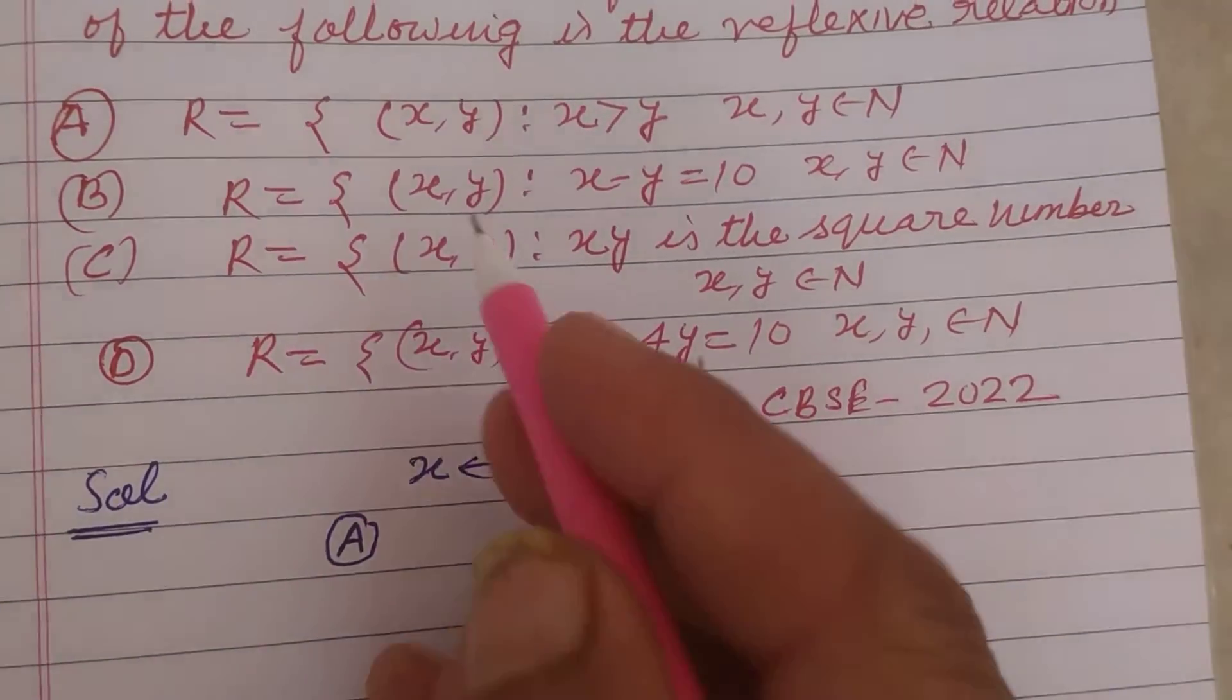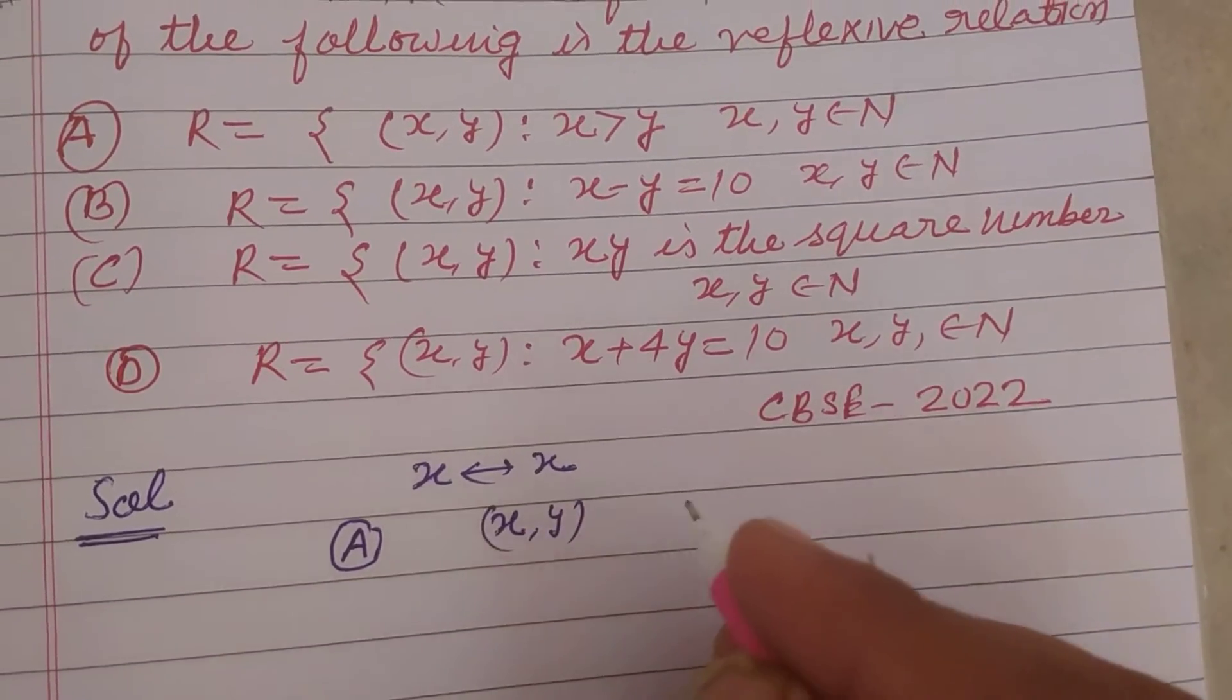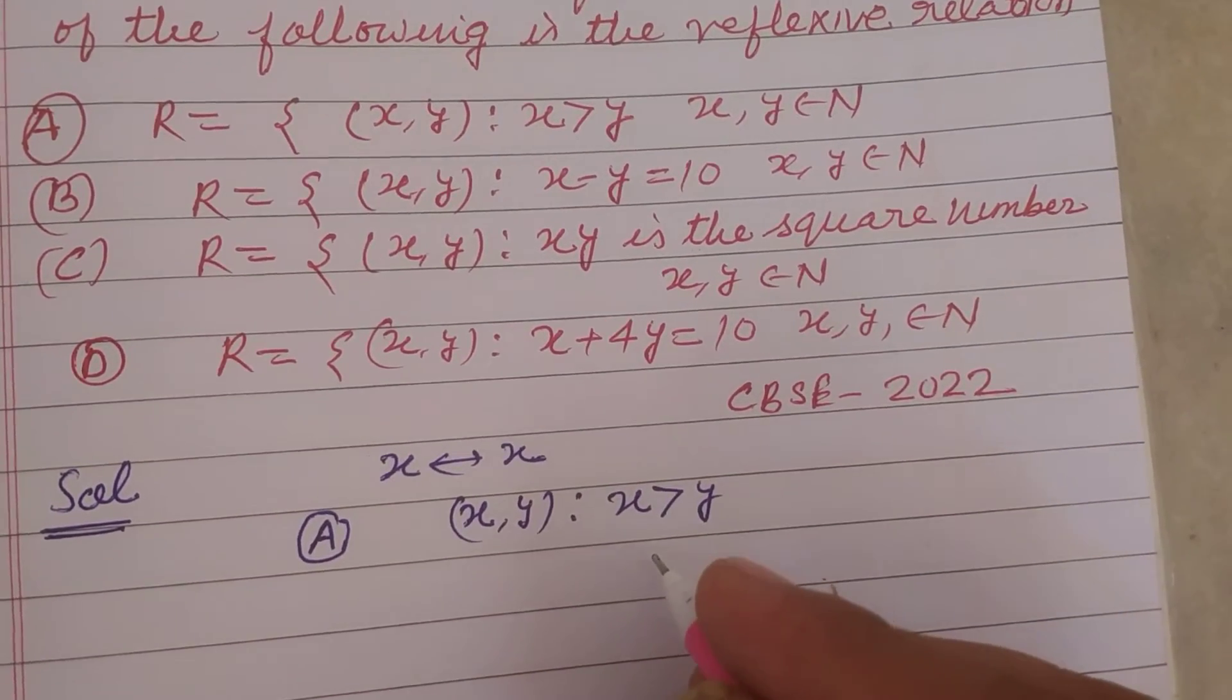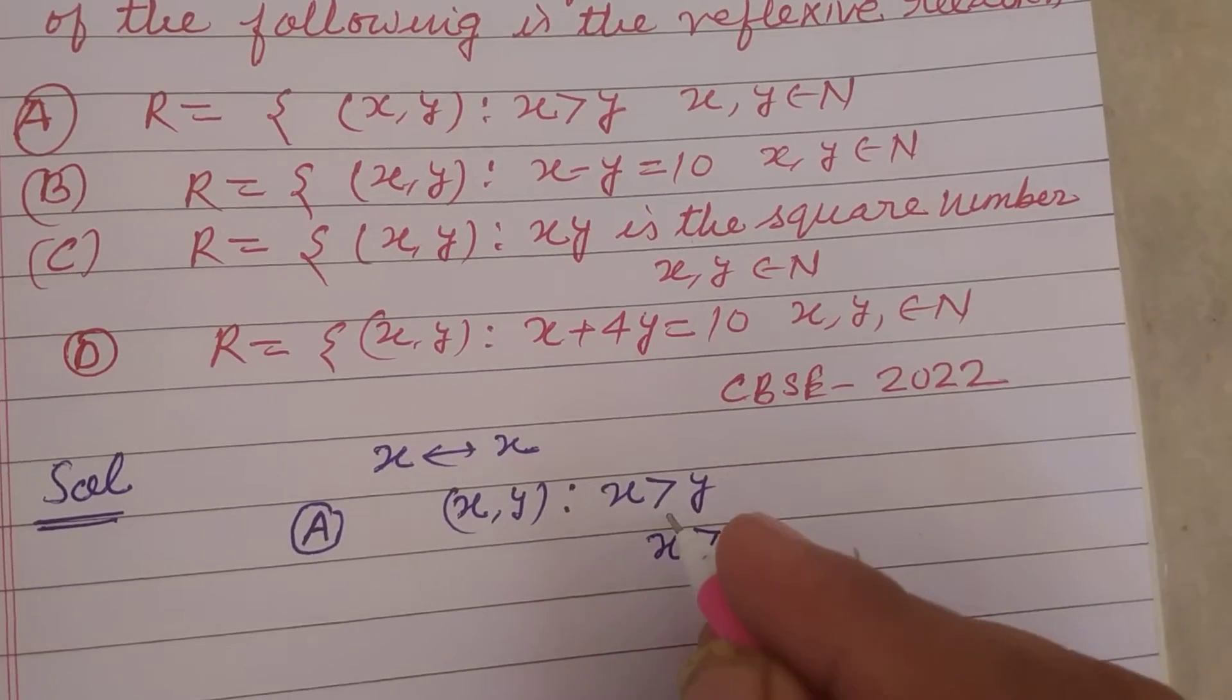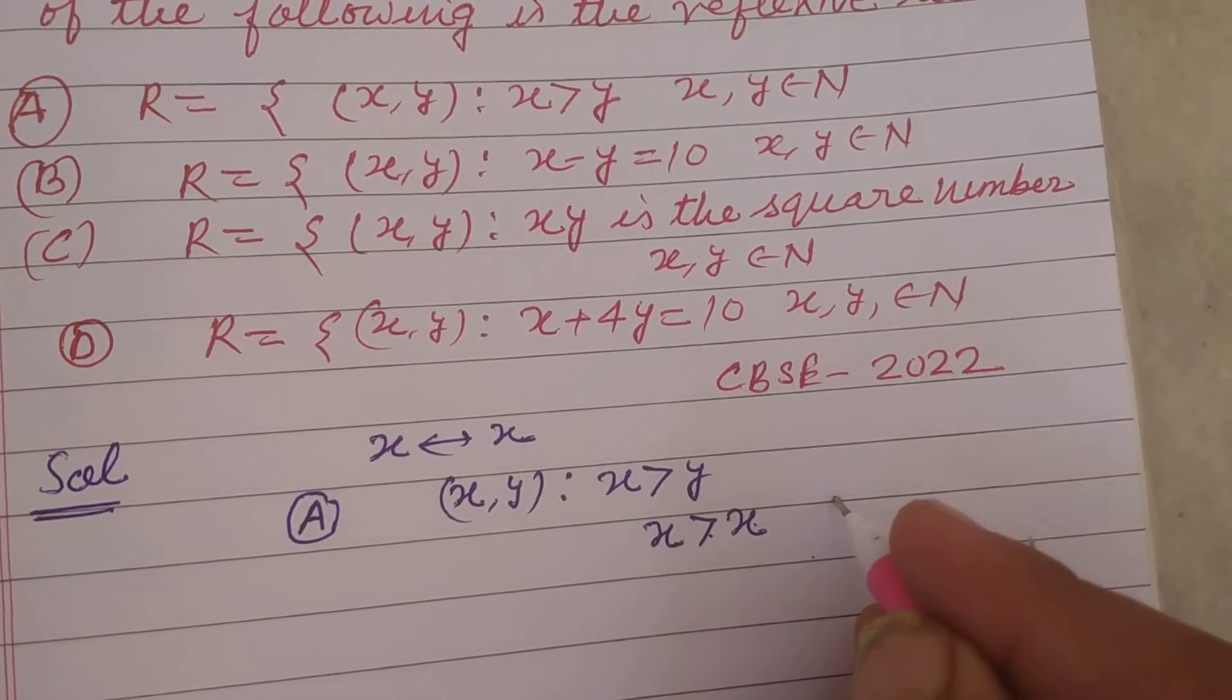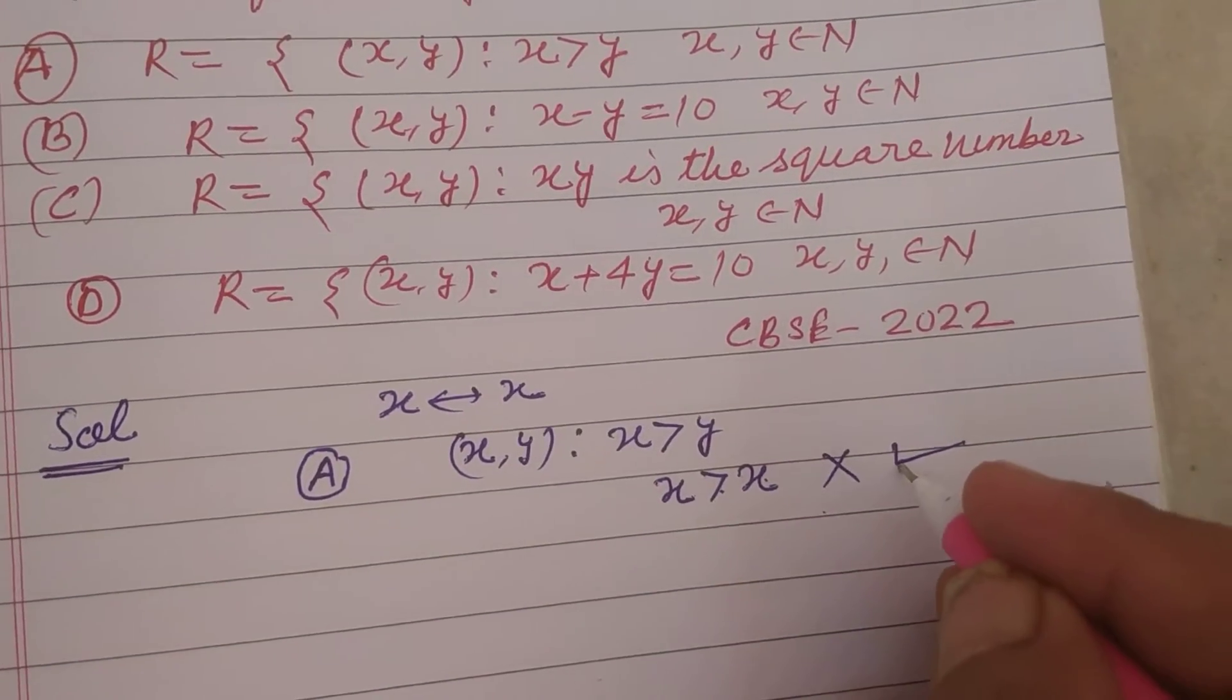The relation in first option is (x, y) are related such that x is greater than y, where x and y belong to N. So for reflexive relation, when we put x equal to y, x to x, so x is greater than x, which is not possible, okay? So it is not reflexive.